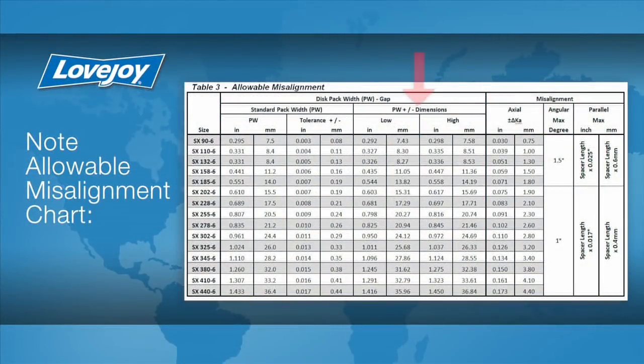All the measurements should fall within the PW high-low range specified in the installation guide. If any of the measurements fall outside the allowable range, you will need to realign the equipment to correct this condition.